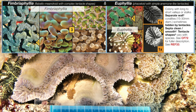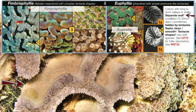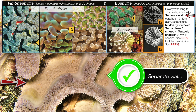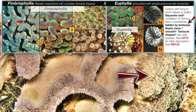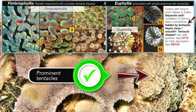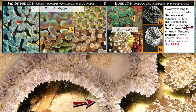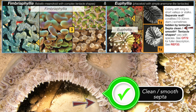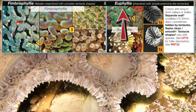Let's tick them off. Separate walls — tick. Sometimes hidden by tentacles — tick. Sceptre clean and smooth — tick. So we're leaning towards Fimbriaphyllia, with Euphyllia as a close second.